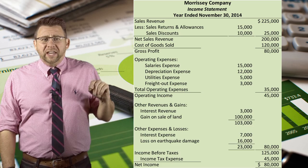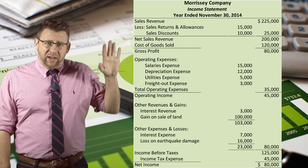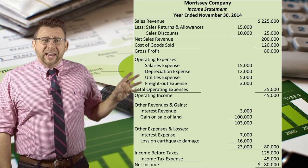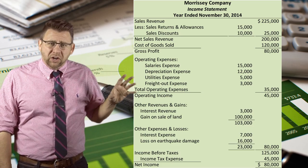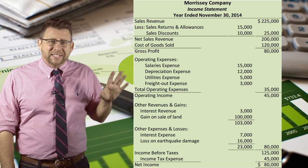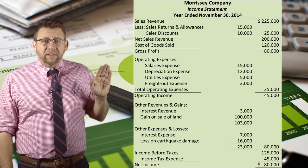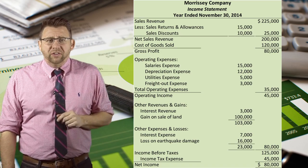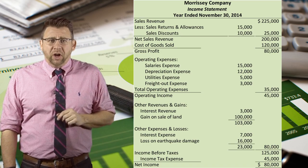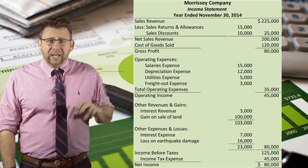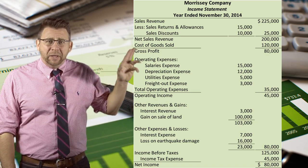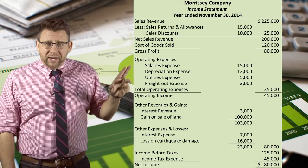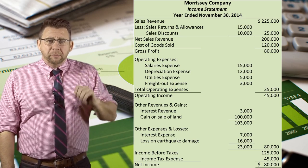Here is an example of the multi-step income statement. You can see the different subtotals listed. Items on an inner column are subtotaled and that amount is carried to the outer column. Again, that does not mean debit or credit, so please remember that.